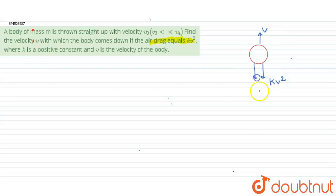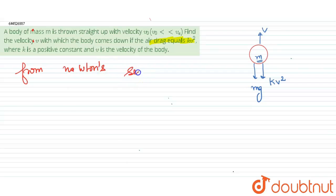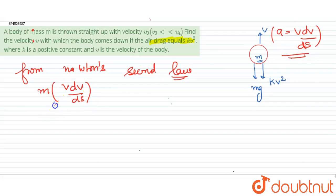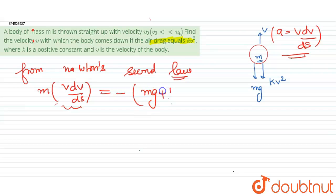The second force is the weight of the body, mg, acting downward. From Newton's second law, we can write: m times v dv/ds equals minus (mg plus kv square), since both weight and air drag act downward when the body moves upward.